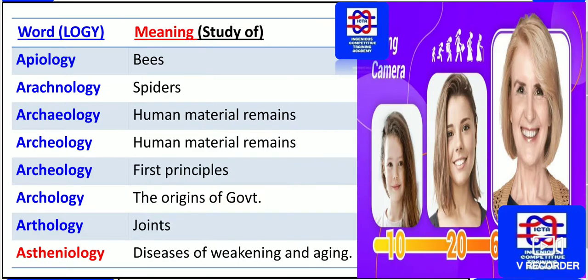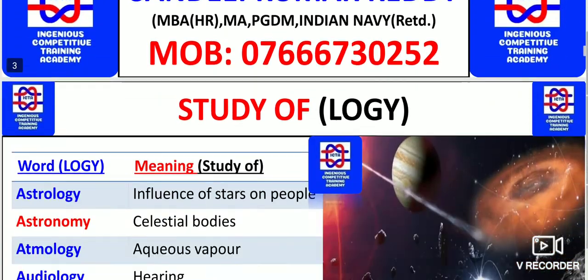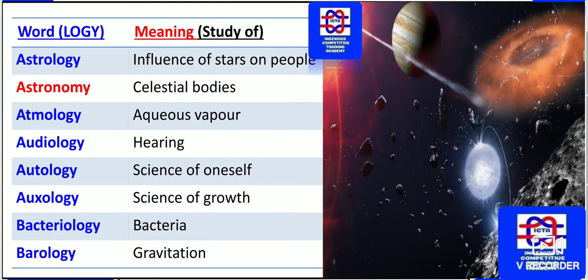Asthenology concerns aging as well as weakening. Next, astrology is the study of the influence of stars on people. Astronomy concerns celestial bodies. Atmology is the study using aqueous vapour — that is, water vapours.